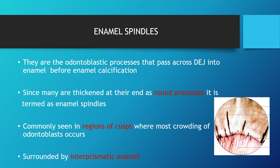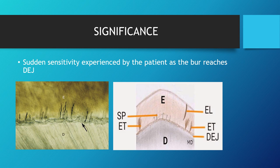Enamel spindles are odontoblastic processes that pass across the DEJ into the enamel before enamel calcification. They are seen in the region of cusps where crowding of odontoblasts occurs and are surrounded by interprismatic enamel. Since many are thickened at their ends and appear round, they are termed enamel spindles. Their clinical significance: during cavity preparation, when cutting enamel near the DEJ but still within enamel, patient pain may be due to enamel spindles.